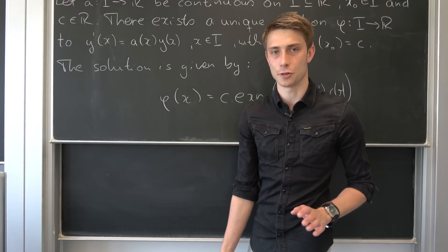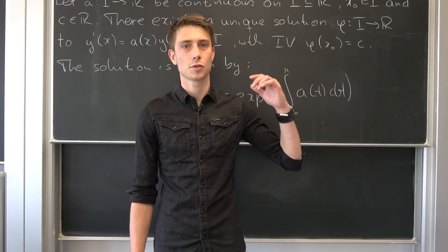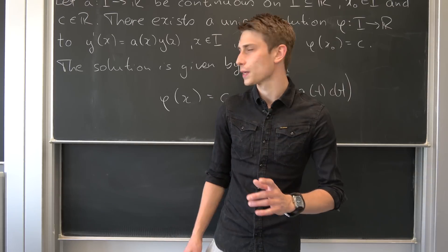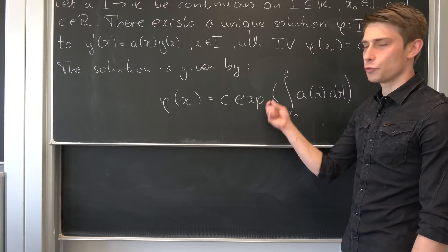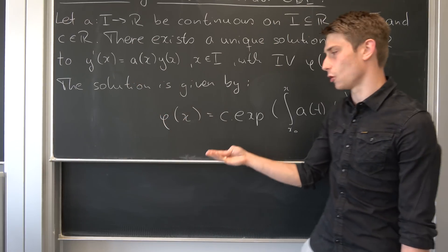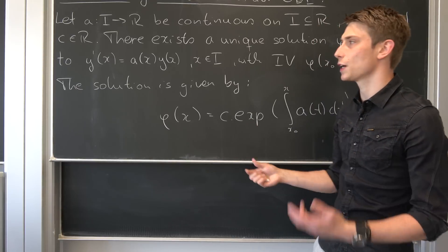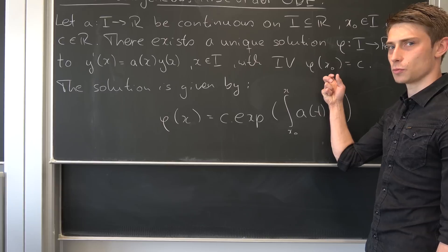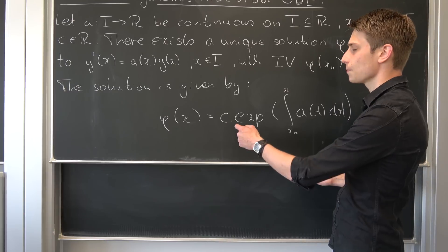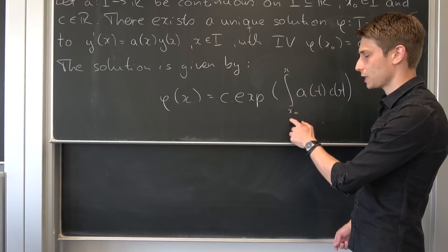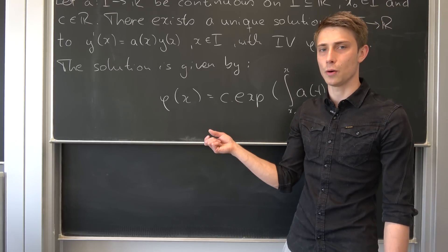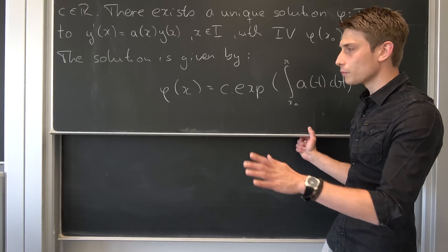This is easy to prove. We need to show existence and uniqueness, starting with existence. Our theorem already states that the given expression is indeed a solution to the differential equation — just plug the information in and verify. We also need to show the initial value condition holds: plugging x₀ in gives φ(x₀) = c · e to the integral from x₀ to x₀, but an integral from a to a is zero, so we get c · e⁰ = c · 1 = c. Existence is shown.